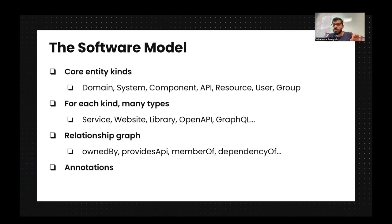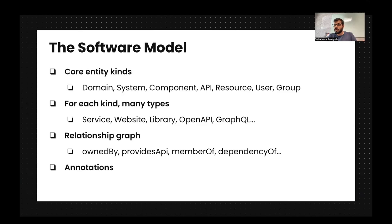The software model contains core entities — for each kind there are types like service, website, and library — along with relationship graphs and annotations. The relationship graph means that when developers come into your Backstage portal, they can see which team owns a particular service, what all the dependencies of an API are, or what a single service is running. This relationship graph is very important in the software model.